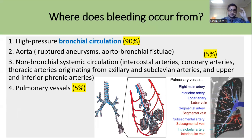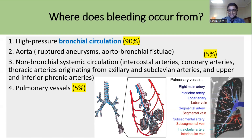In Massive Hemoptysis, in 90% of cases the bleeding occurs from the high-pressure bronchial circulation. In the remaining 5% it is from the pulmonary vessels, and the other 5% occurs from other arterial sources like the aorta or non-bronchial systemic circulation, such as the intercostal arteries, coronaries, or even the phrenic arteries.